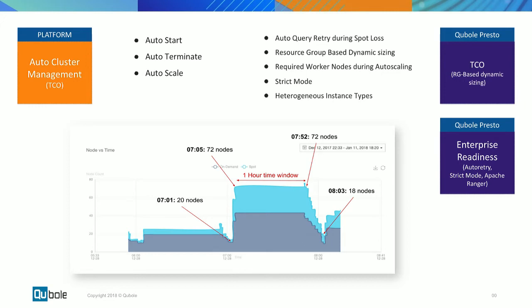Heterogeneous node support is another interesting feature we added to Presto. When provisioning a cluster, you can use different instance types — c5, r4, various nodes — to finish the job. Heterogeneous support provides flexibility: if a spot instance isn't available in a certain region or a specific type isn't available, you can replace it with a similar memory or CPU configuration through a heterogeneous setup.